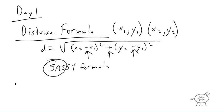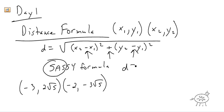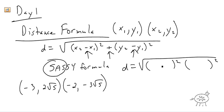Let's try it on a friendly example: the points are negative 3 comma 2 root 5, and negative 2 comma negative 3 root 5. When you're doing the problem, math fans, put the subtract-add-subtract skeleton in first with the negatives already placed, so when you put in the negative numbers you don't get confused. So x2 minus x1 is negative 2 minus negative 3, and y2 minus y1 is negative 3 root 5 minus 2 root 5.